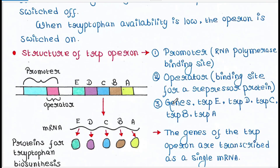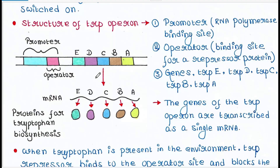Now let's look at the structure of the tryptophan operon. This is a very simple structure. This whole part is the promoter — we know that RNA polymerase binds here. A portion of the promoter is called the operator, which is basically the binding site for a repressor protein. So these two regions overlap. Next, there are five structural genes: tryptophan E, D, C, B, and A.